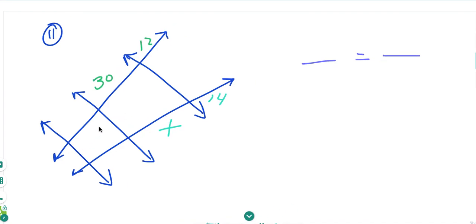Okay, again I have three parallel lines cutting two transversals. So they're going to set up a proportion for us again.